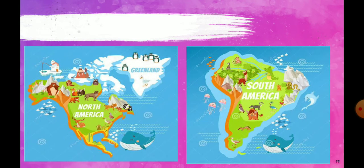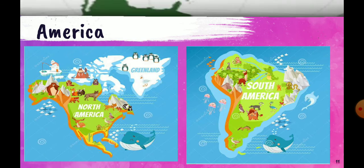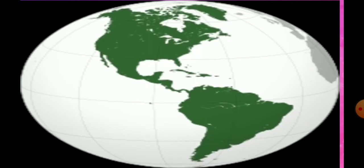Then we are having the continents North America and South America. Here we are having the maps of North America and South America, as it is clear from their location. Here is another image of South and North America to make it clearer. The one on top is North America, and the one on the bottom is South America.